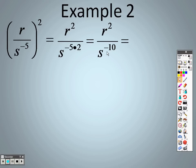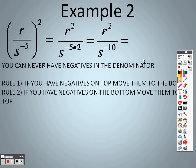Now, I can't have negative exponents, so this is that rule with negative exponents. If it's on the bottom, I'm going to move that to the top, so I actually end up with r squared and s to the 10th power, because you can't have negatives, period.